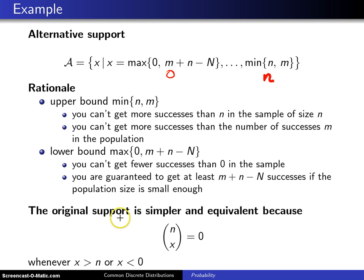Now, the original support is simpler and a lot cleaner to write, and the reason for that is if you ever run into a binomial coefficient n choose x, where x is either greater than n or x is less than 0, that is defined to be 0, and it turns out that that wipes out the appropriate terms, and you wind up effectively with this support anyways.